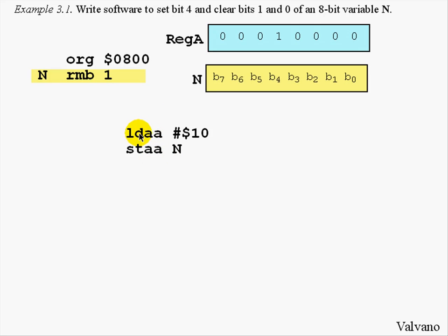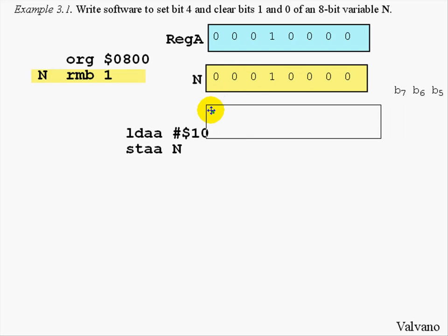When we execute the load A instruction, the value of 00010000 is put into register A. If we store that value of register A into variable N, all 8 bits are replaced. Indeed, this did create bit 4 equal to 1 and bits 1 and 0 equal to 0. But what happened to the other bits that we didn't specify?